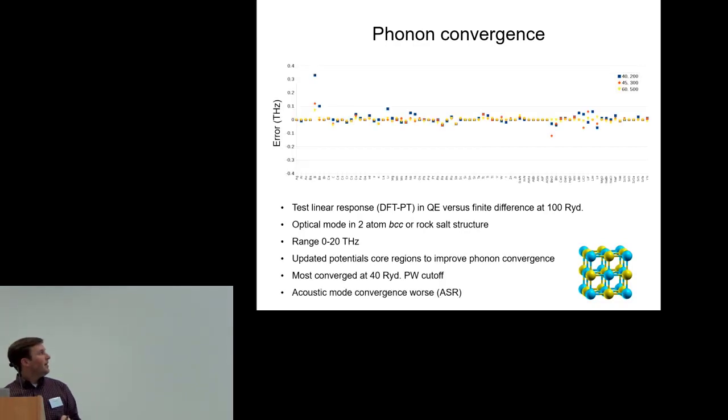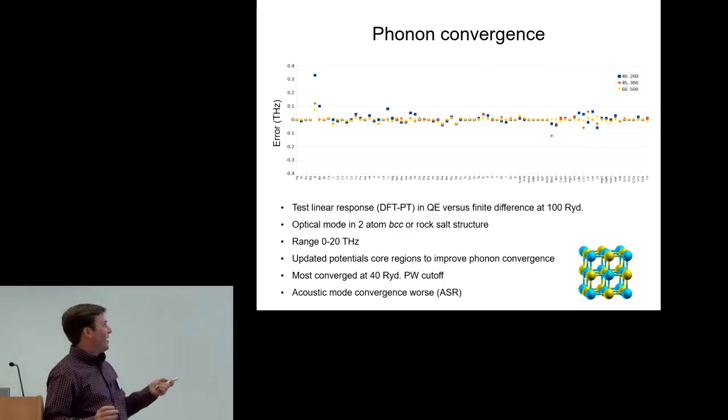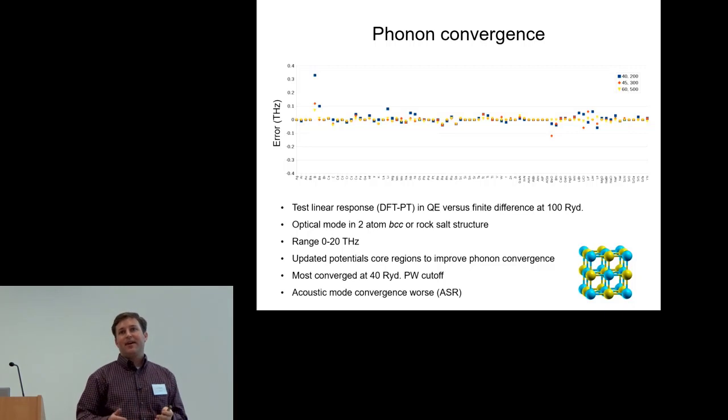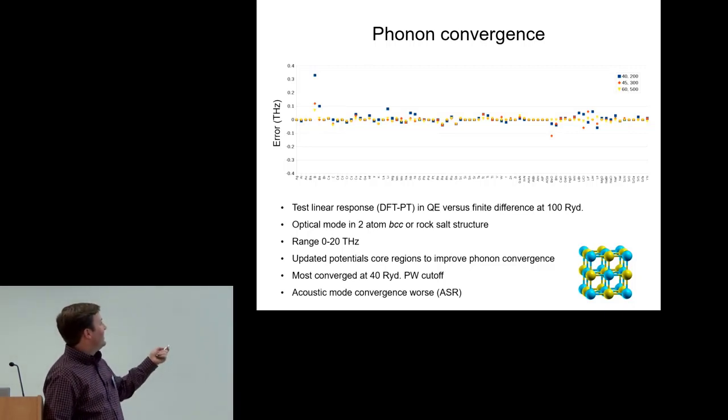This is at different plane wave cutoffs, so 40, 45, 60 Rydbergs. This is the error in terahertz of that optical mode. You can see at the high plane wave cutoff, the linear response agrees with the finite difference, which is good, otherwise you'd be in big trouble. But even at moderate plane wave cutoffs, it's possible to get good results for the optical modes.